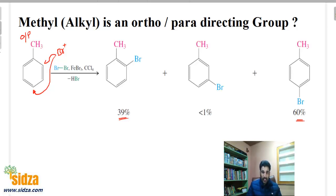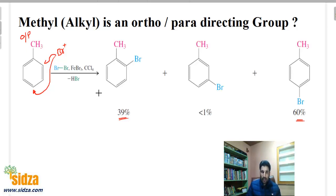I have explained what ortho-para directing groups and meta directing groups are in previous videos — I'll put the link in the description so you can watch them. Right now we want to know how the methyl group acts as an ortho-para directing group. How do we explain that methyl, or any other alkyl group, is an ortho-para directing group?